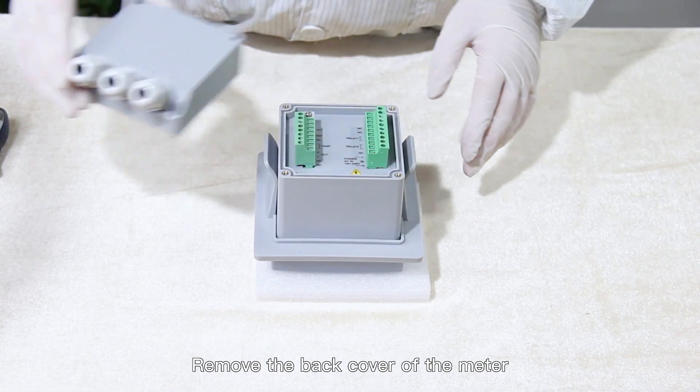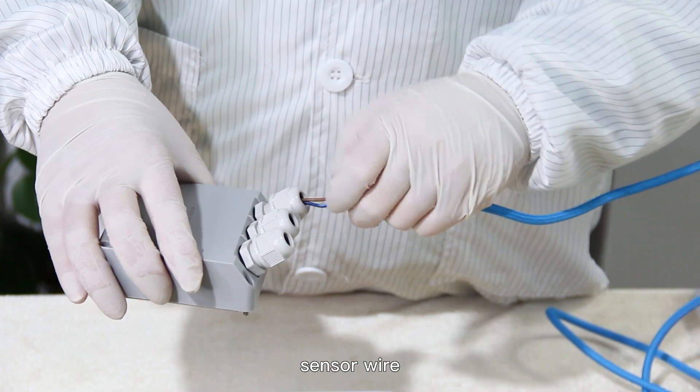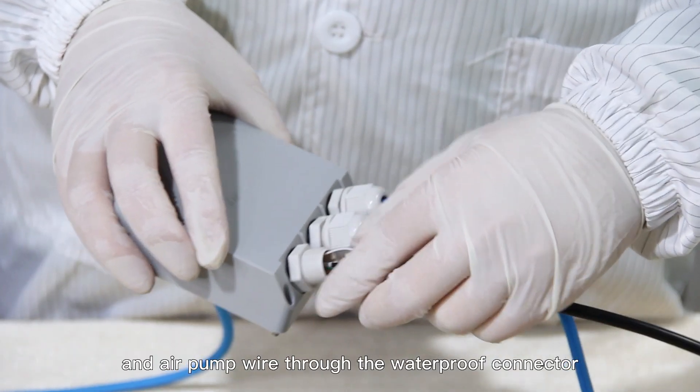Remove the back cover of the meter. Thread the power cord, sensor wire, and air pump wire through the waterproof connector.